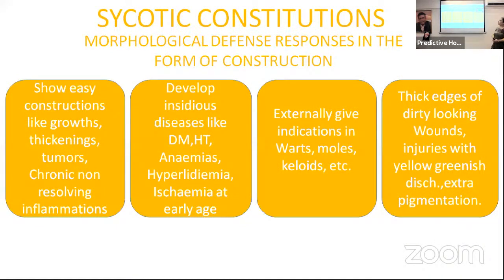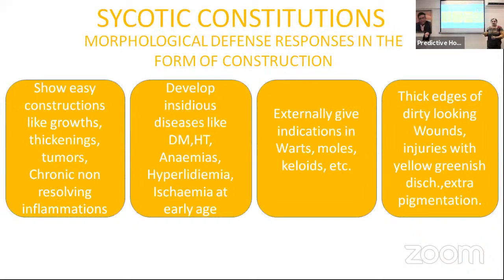To summarize: psychotic constitutions show morphological defence responses in the form of construction — easy constructions like growths, thickenings, tumors, and chronic non-resolving inflammations. They develop insidious diseases like diabetes, hypertension, anemias, hyperlipidemia, and ischemia at a very early age. Blood reports will show high cholesterol and triglycerides, blood pressure rising. Externally, warts, moles, and keloids indicate the psychotic constitution. Thick discharges, dirty-looking wounds with yellow-greenish discharge, and extra pigmentation will also be seen.